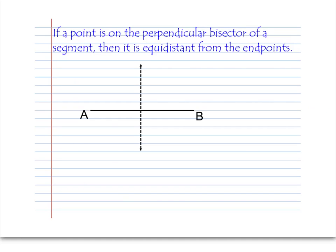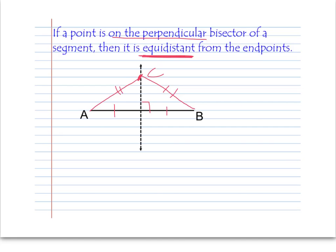Now we're going to make some connections to things you may remember from the beginning of the year when we did some activities around the idea of equidistant — one of my favorite math words. Here are some theorems you're going to need to write down. If a point is on a perpendicular bisector of a segment, remember a perpendicular bisector is a line that is perpendicular to segment AB and bisects it — splits it into equal parts. The theorem says if a point is on the perpendicular bisector, then it is equidistant from the endpoints. So, the distance from C to A must be the same as from C to B.